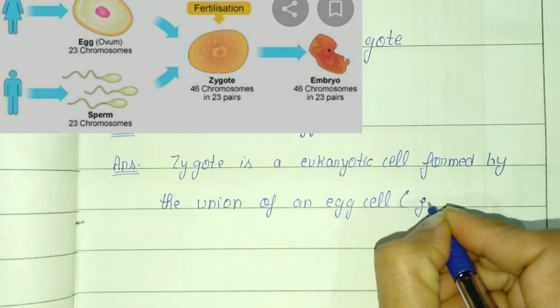Union of an egg cell and sperm cell. Sperm cell is formed in the male body, so sperm cell is the male gamete.